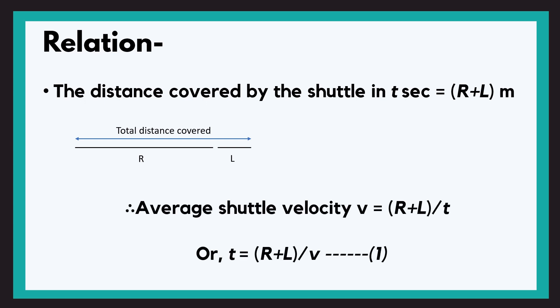Now we know that velocity is equal to distance upon time. Using this we can say that average velocity will be R plus L, that is distance covered by the shuttle, over time. Or t equals R plus L upon V. Now let us keep it as our equation number one.